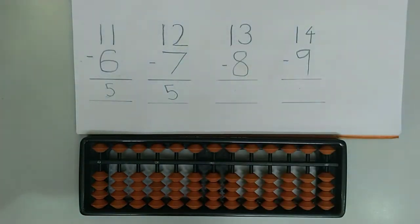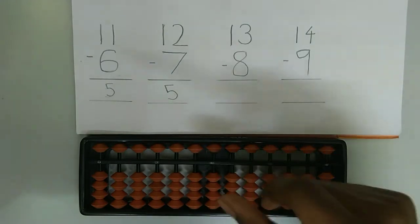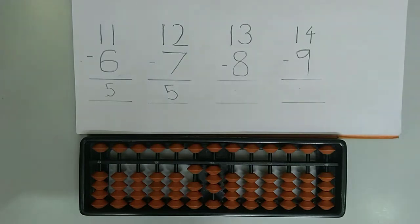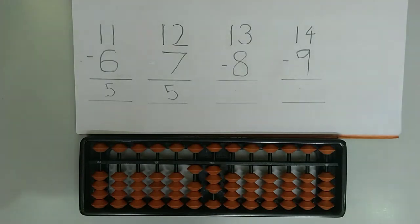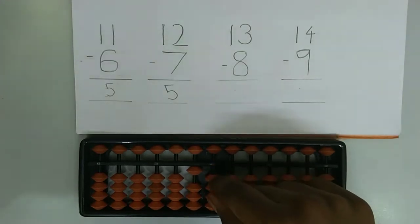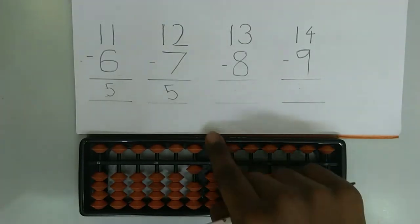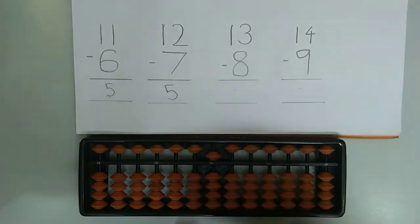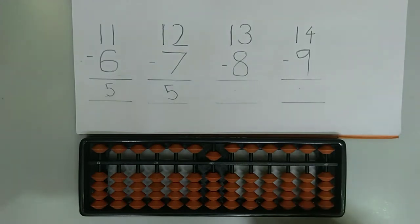Let's try the next example: 13 minus 8. First we need to represent 13 on the abacus. Now we need to subtract 8. The friend of 8 is 2, so we need to add 2 because it's plus friend. To add 2 to 3 we subtract 3 because 3 is the friend of 2 and the formula for addition is minus friend, and plus boss which is 5. And again at the last we need to subtract the big friend boss which is 10. The final answer is 5.